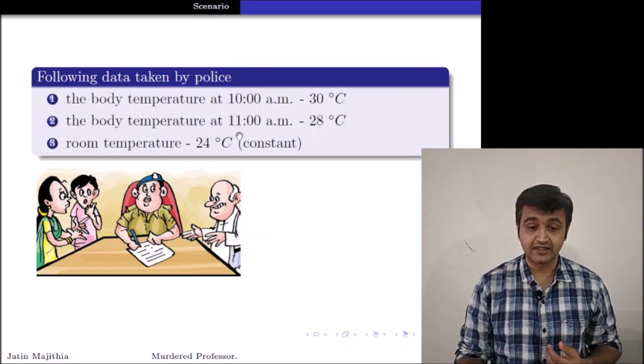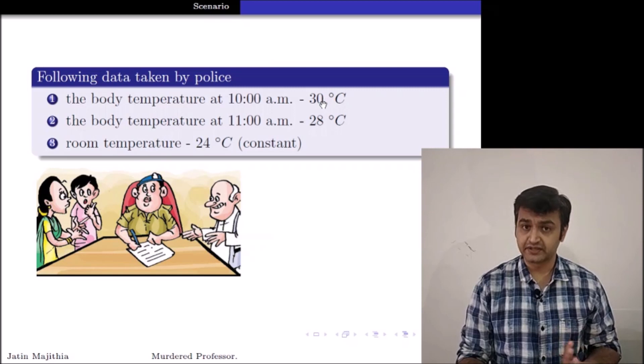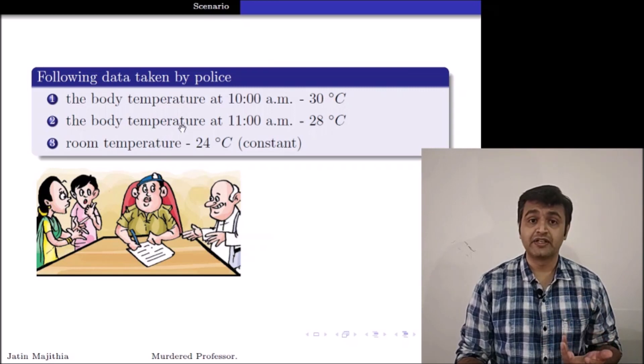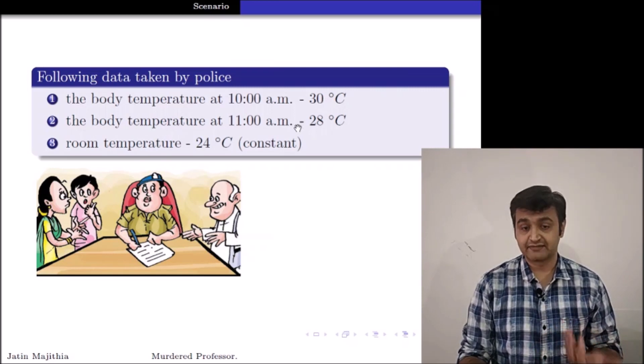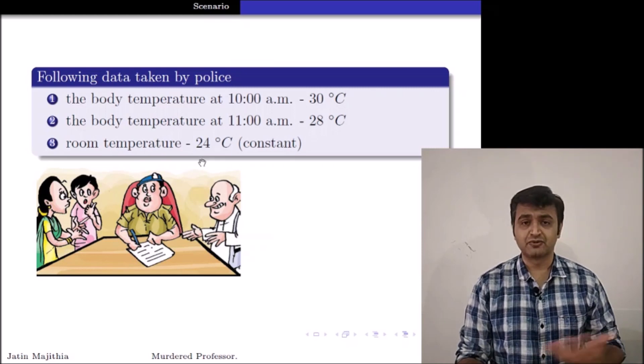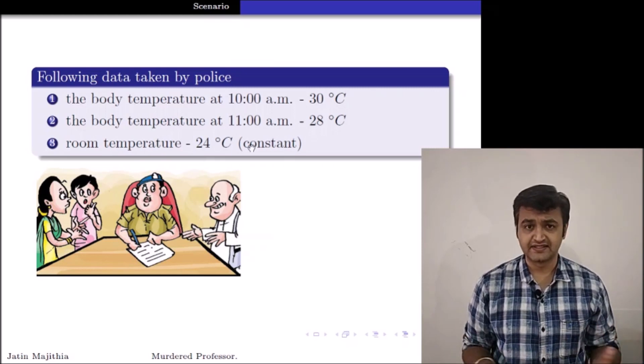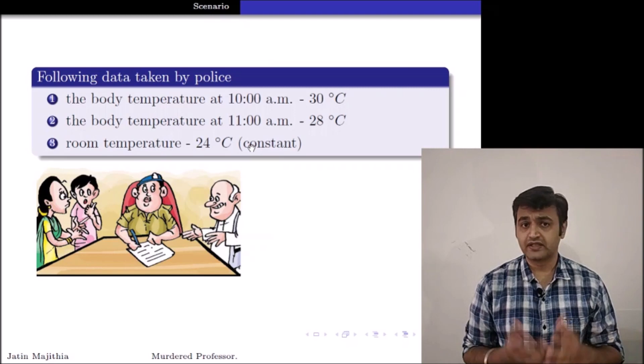They will take my body temperature at 10 a.m. Suppose it's 30 degrees Celsius. They will take my body temperature at 11 a.m., say it is 28 degrees Celsius. And the room temperature, suppose AC is on and it's at 24 degrees Celsius. So these are the following data which is available.